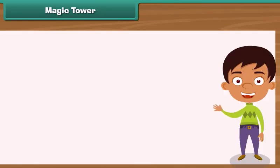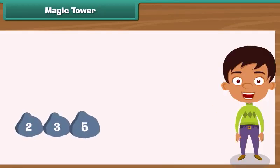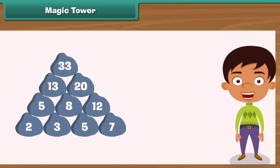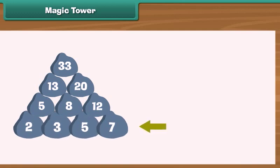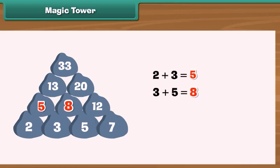Magic tower. Look at these number stones arranged as a tower. There is a pattern in them. Let us decipher it. Let us take the stones in the bottom most row. 2 plus 3 is equal to 5. 3 plus 5 is equal to 8. 5 plus 7 is equal to 12. 5, 8 and 12 form the row above.